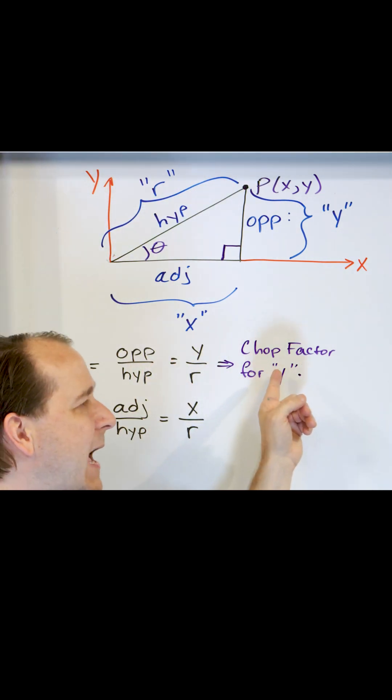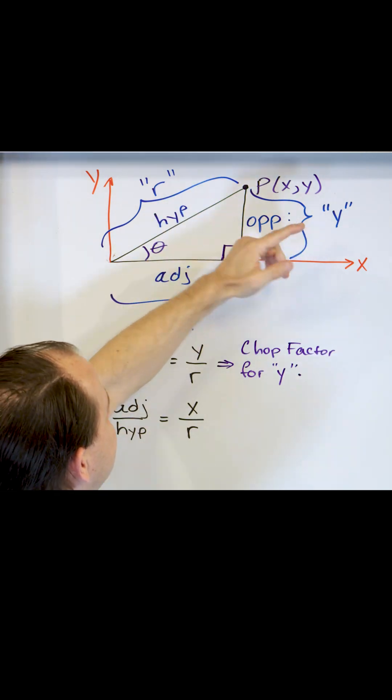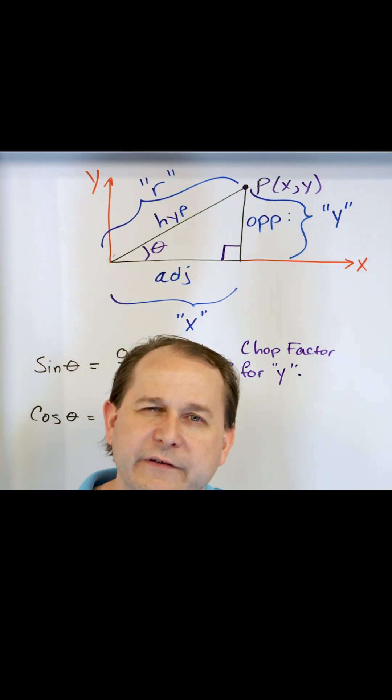If the chop factor for y is very big, then that means that this triangle is really tall and most of the triangle is going up.